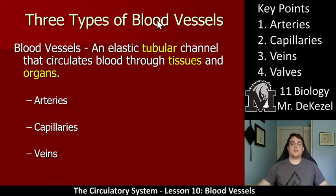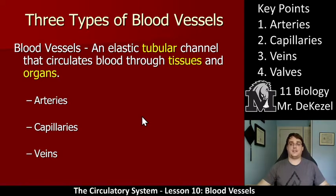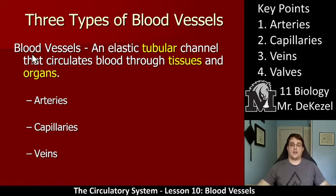There are three types of blood vessels — arteries, capillaries, and veins. Blood vessels in general are an elastic, tubular channel that circulates blood through tissues and organs, and around your whole body, essentially.